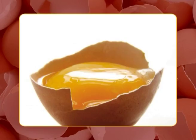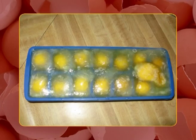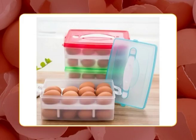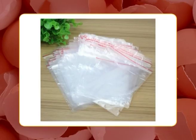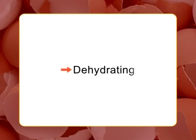To freeze whole eggs, whisk the eggs together until blended and freeze in airtight containers. To save space, freeze in small snack-size or quart-size resealable plastic bags and lay flat in the freezer until frozen. Dehydrating: Eggs are broken, shell and membranes are separated, and liquid eggs are preserved by drying.